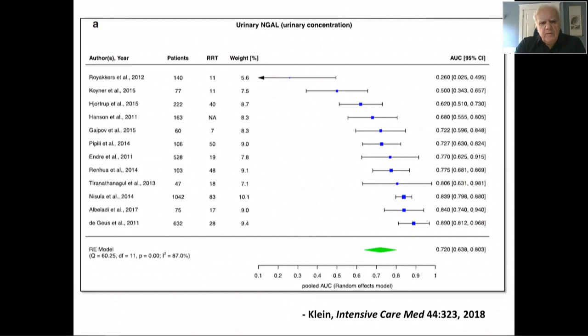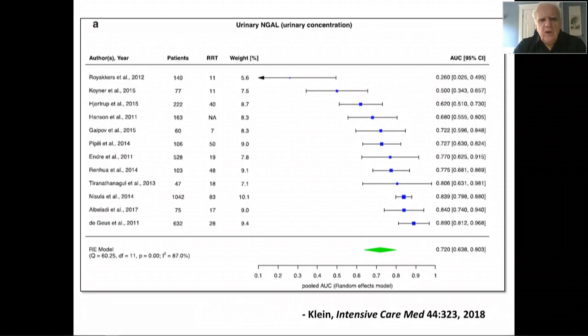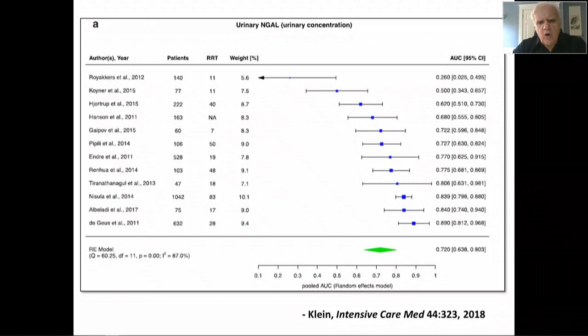It would appear obvious that if we could detect organ dysfunction at an earlier stage, we could intervene and benefit the patient. But sadly, we've not been able to document that that is the case. For example, urinary NGAL has been proposed as a biomarker of renal dysfunction in sepsis and acute illness, and here is a meta-analysis of multiple studies of NGAL predicting the need for subsequent renal replacement therapy. As a biomarker, it's not all that good — the area under the receiver operating characteristics curve is only just a little bit over 0.7, which is not precise enough to inform a clinical decision such as starting renal replacement therapy.